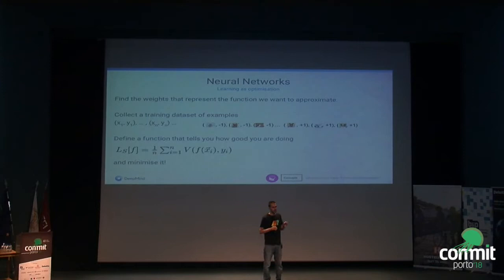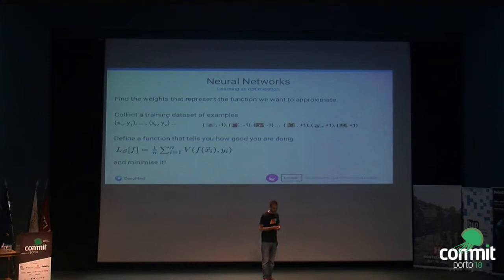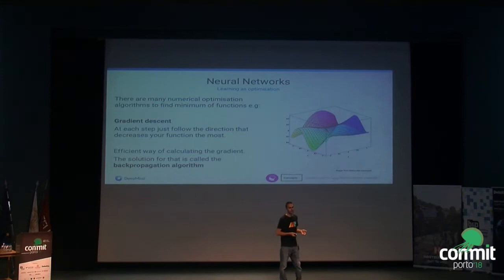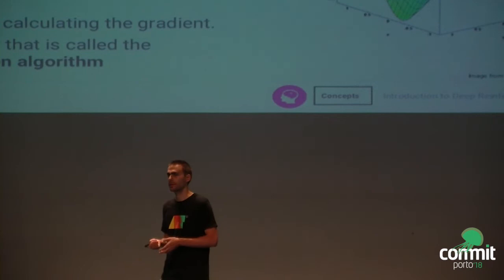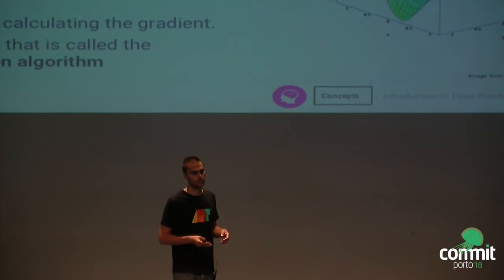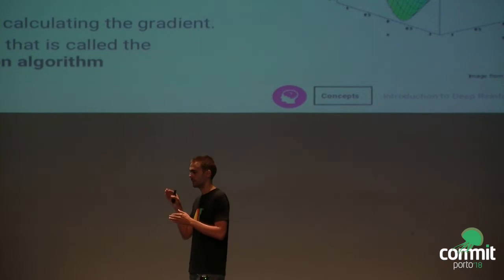Then you define what we call a loss function — a smooth differentiable function that tells you how close you are to getting the answers you expect. If you are outputting plus three for an image of a cat that should be minus one, you incur a penalty. The closer your network's output is to what you expect, the lower this function is. Learning is then just minimizing a function, and you can reuse knowledge from numerical optimization. The simplest and commonly used method is gradient descent: take small steps in the direction that decreases the loss a little bit.